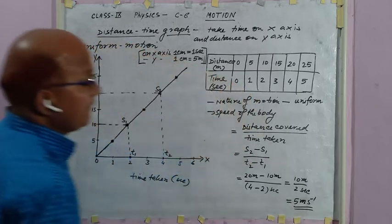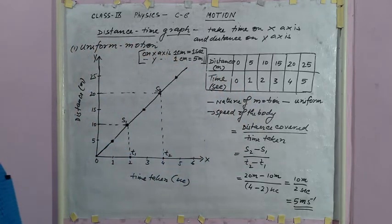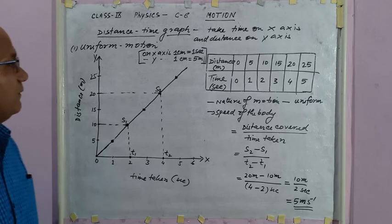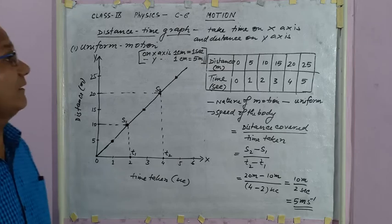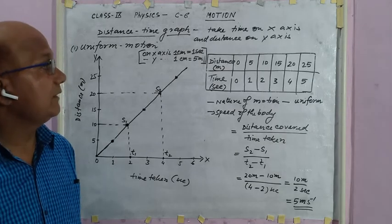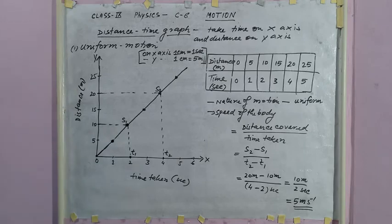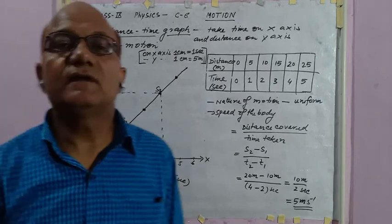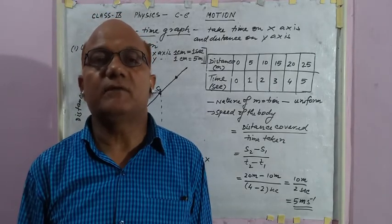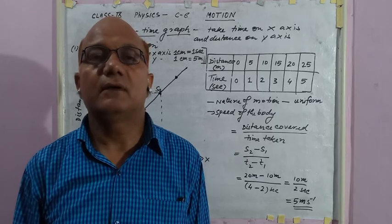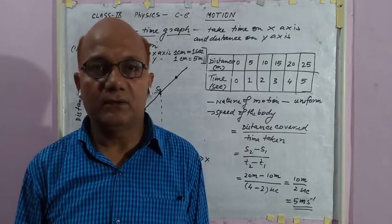In this way, from the distance-time graph, you can find out the nature of motion and the speed of the body between any time interval. This session is completed. We will discuss some more types of distance-time graphs in the next video. Thank you, students.